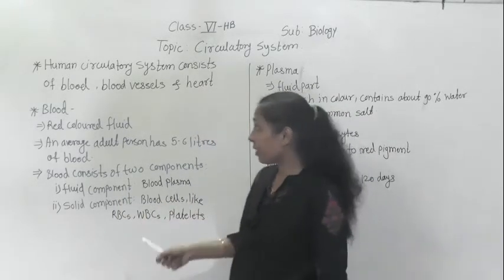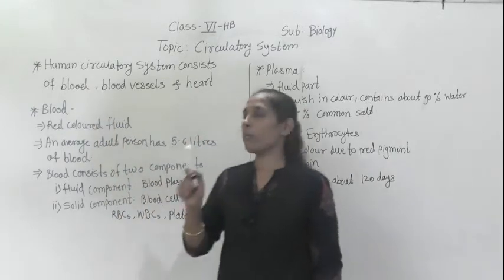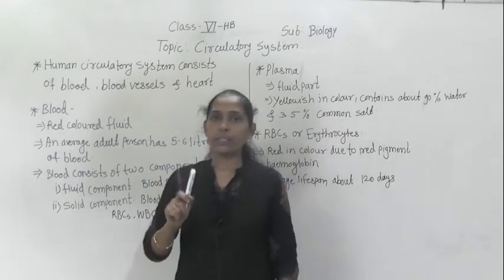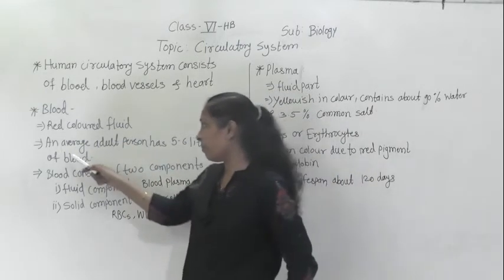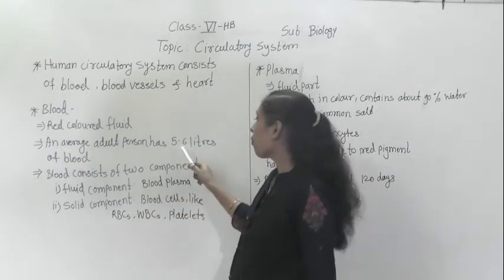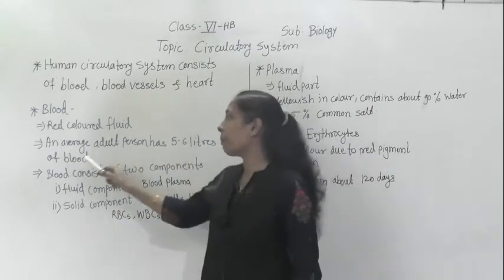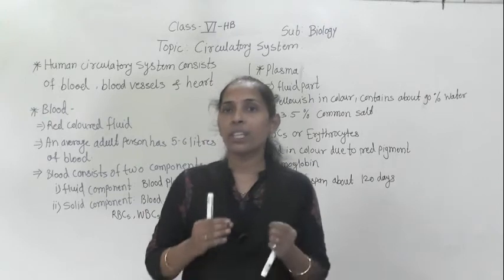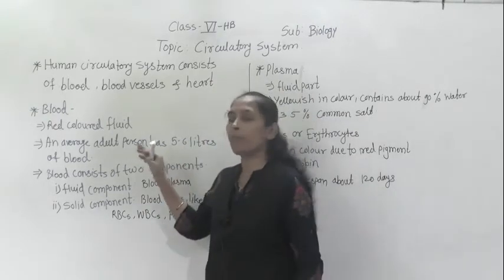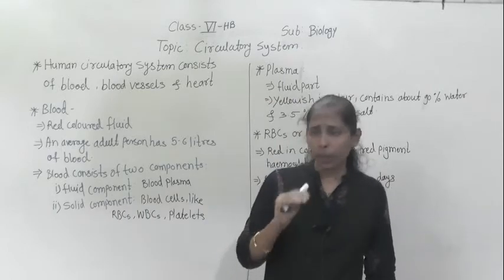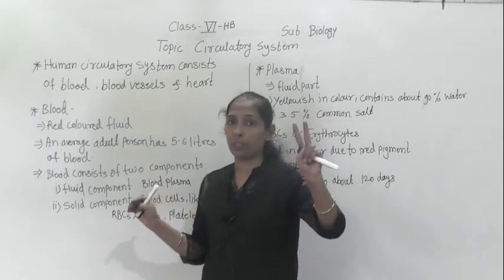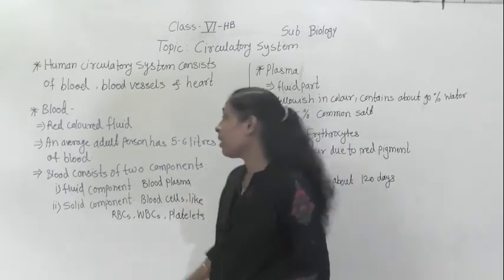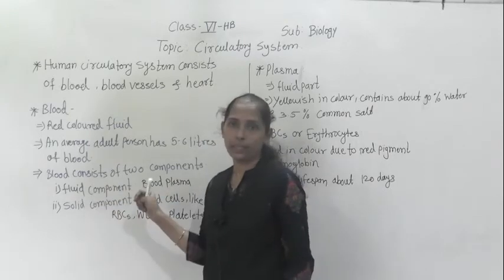Let's discuss about blood. What is meant by blood? The blood is a red color fluid. An average adult person has 5 to 6 liters of blood in his body. Blood consists of two components: fluid components and solid components.